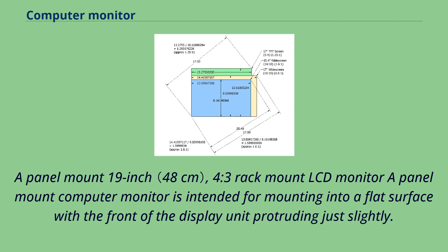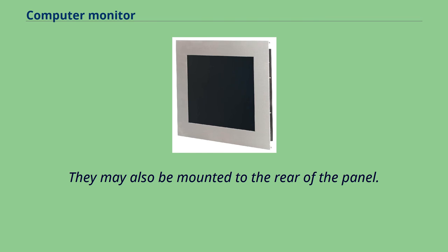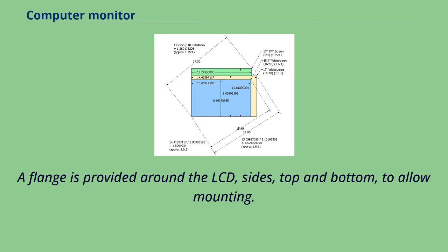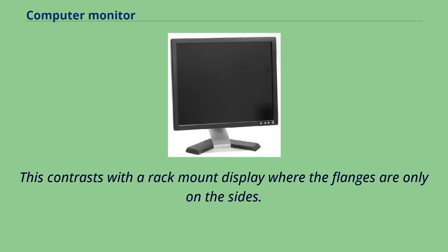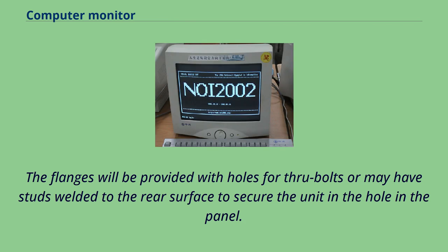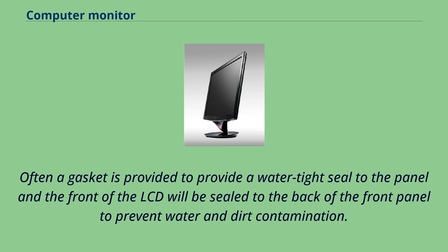A panel mount computer monitor is intended for mounting into a flat surface with the front of the display unit protruding just slightly. They may also be mounted to the rear of the panel. A flange is provided around the LCD on sides, top and bottom to allow mounting. The flanges will be provided with holes for through bolts or may have studs welded to the rear surface to secure the unit. Often a gasket is provided to create a watertight seal to the panel, and the front of the LCD will be sealed to the back of the front panel to prevent water and dirt contamination.